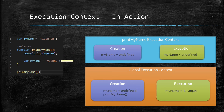After executing line four, when it moves to line six, the 'myName' variable gets assigned the value 'Vishnu'. Now you understand why on line four we had 'undefined' printed.